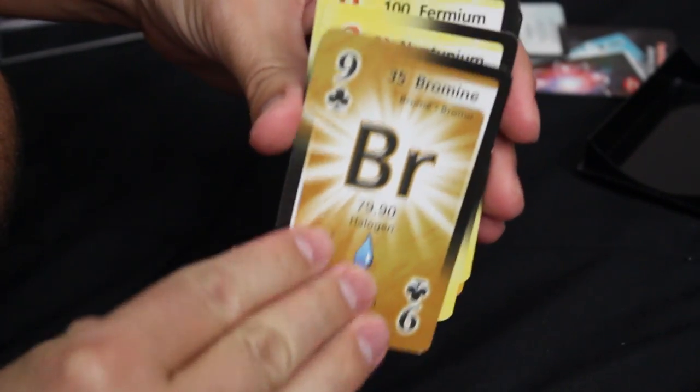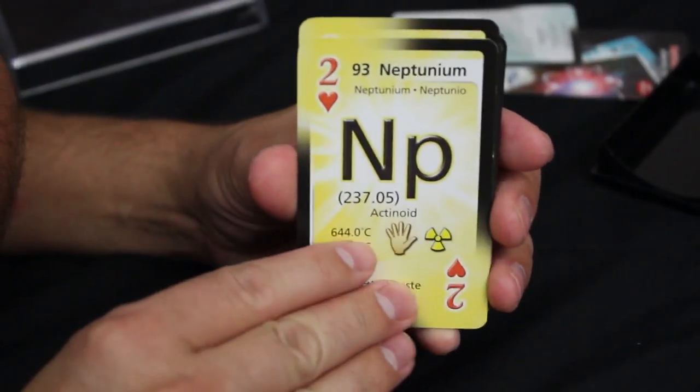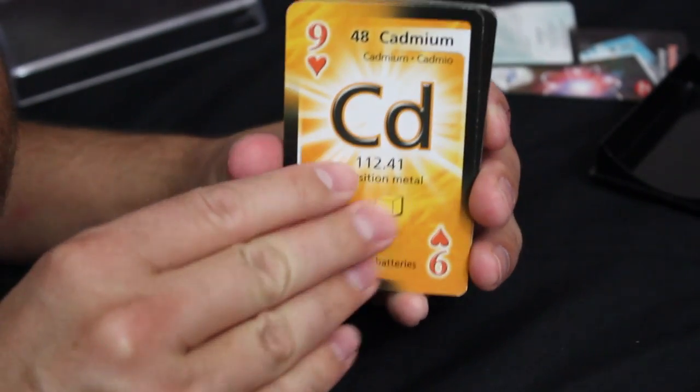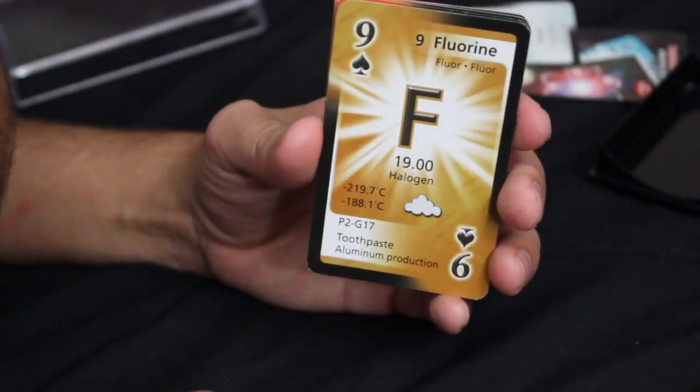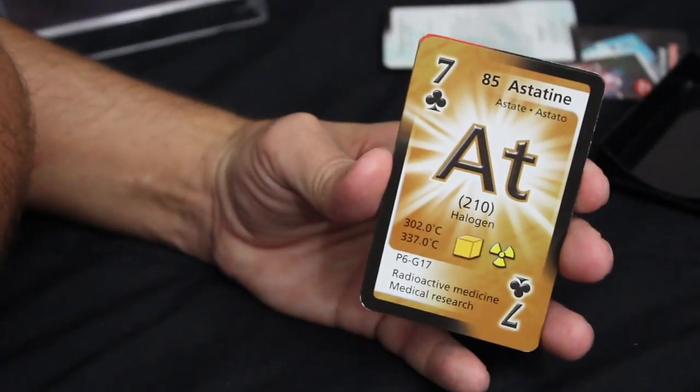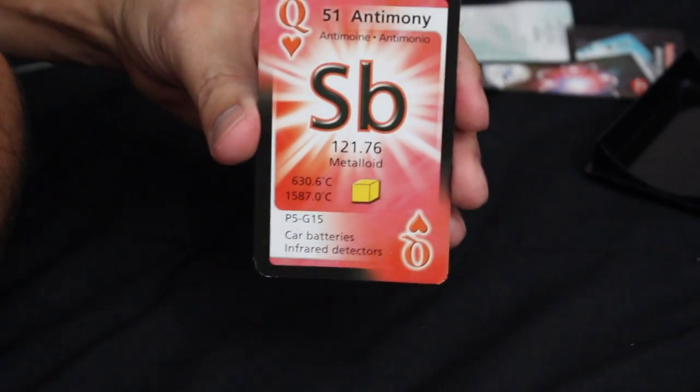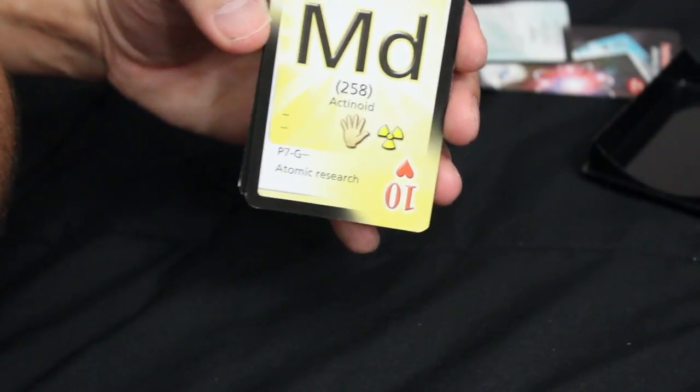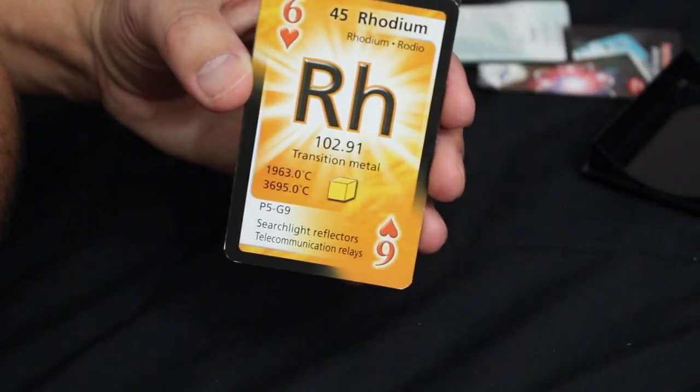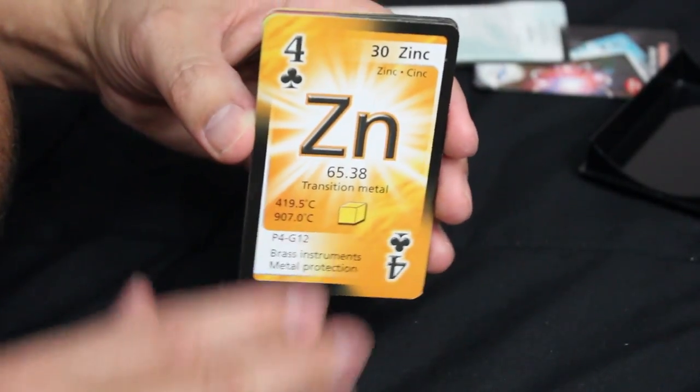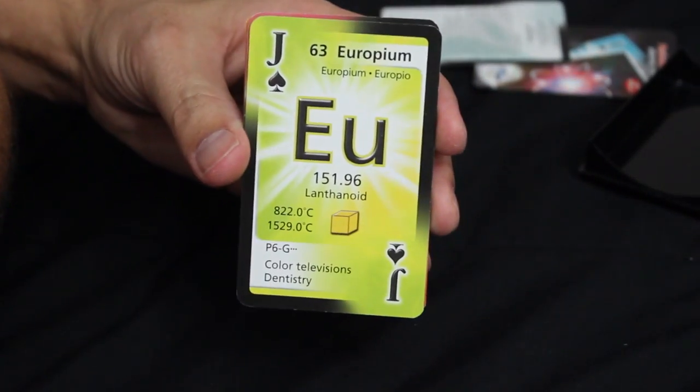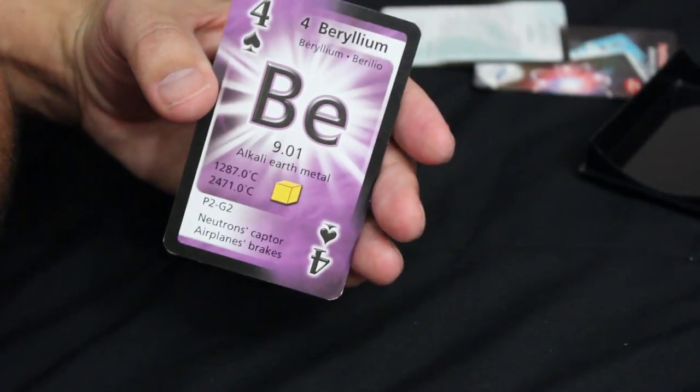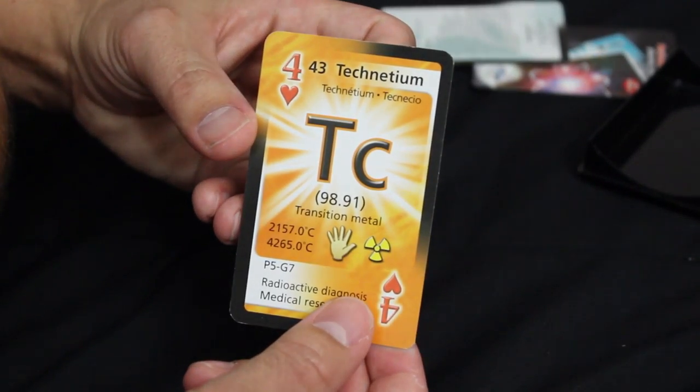Neodymium, indium, silicon, chromium, bromine, neptunium, fermium, cadmium, fluorine, astatine, antimony, mendelevium, erbium, zinc, germanium, beryllium, technetium. That's one side of the deck.